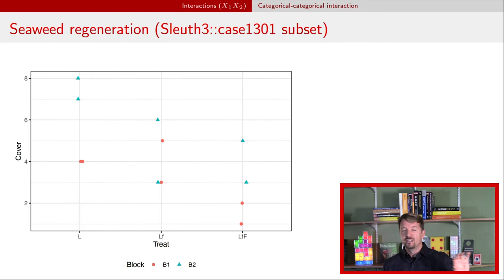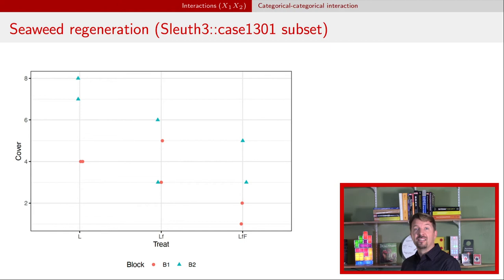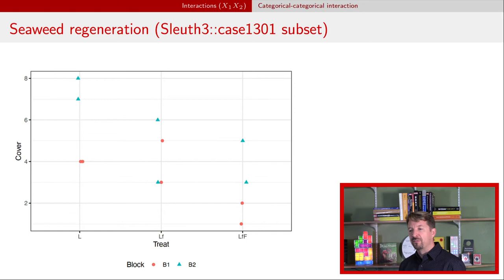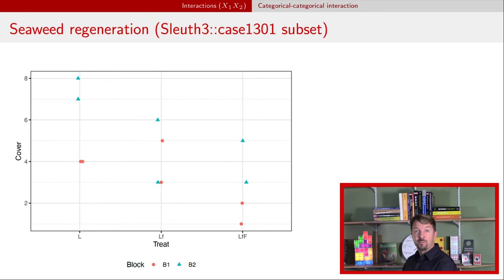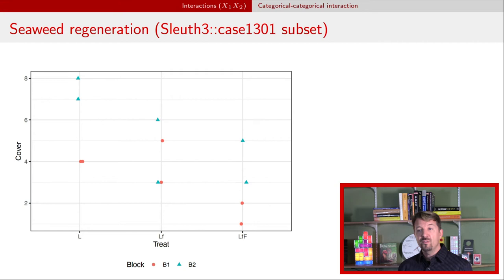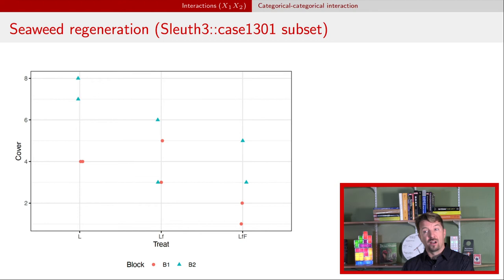Now we move to a third example with two categorical variables. This is an ocean experiment on seaweed regeneration with three treatments based on which animals could access the units: L for limpets, LF for small fish, and LFF for big fish. This was also a block experiment replicated across blocks. The key point is that we have two categorical variables: treatment (L, LF, LFF) and block (block one and block two).